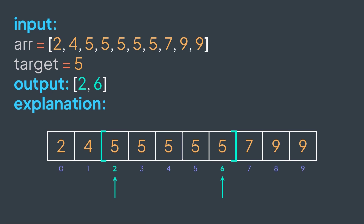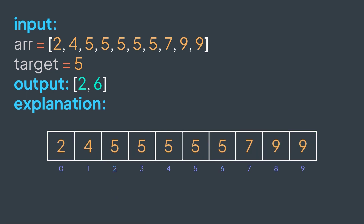First of all, because the array is sorted, all the elements with the same value will be adjacent to each other. For example, here all positions of the value 5 are consecutive. It means that a first possible solution is to start traversing the array from the beginning, find the first position of target, and keep walking until finding the last position.